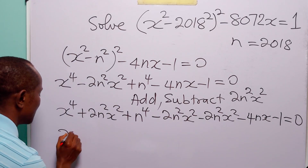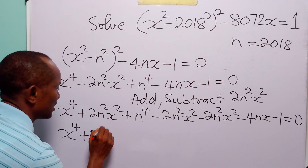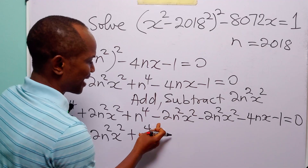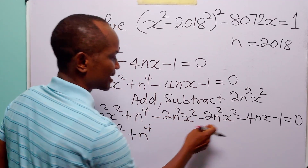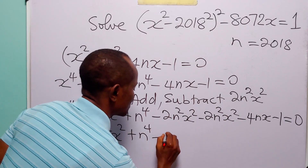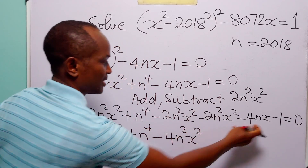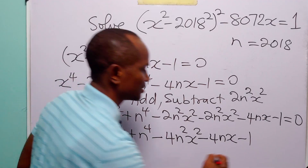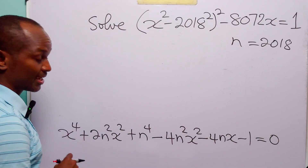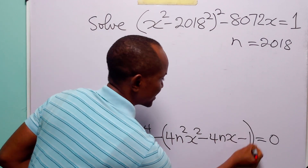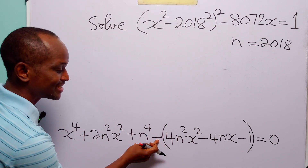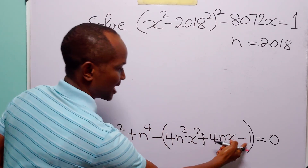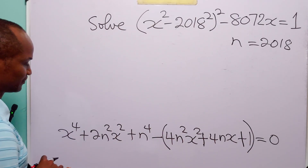So we have x to the power 4 plus 2n²x² plus n to the power 4, then minus 2n²x² minus 2n²x², which gives minus 4n²x², then minus 4nx and minus 1, all equal to zero. Let me introduce a bracket here — the negative sign outside the bracket changes the signs inside to positive.